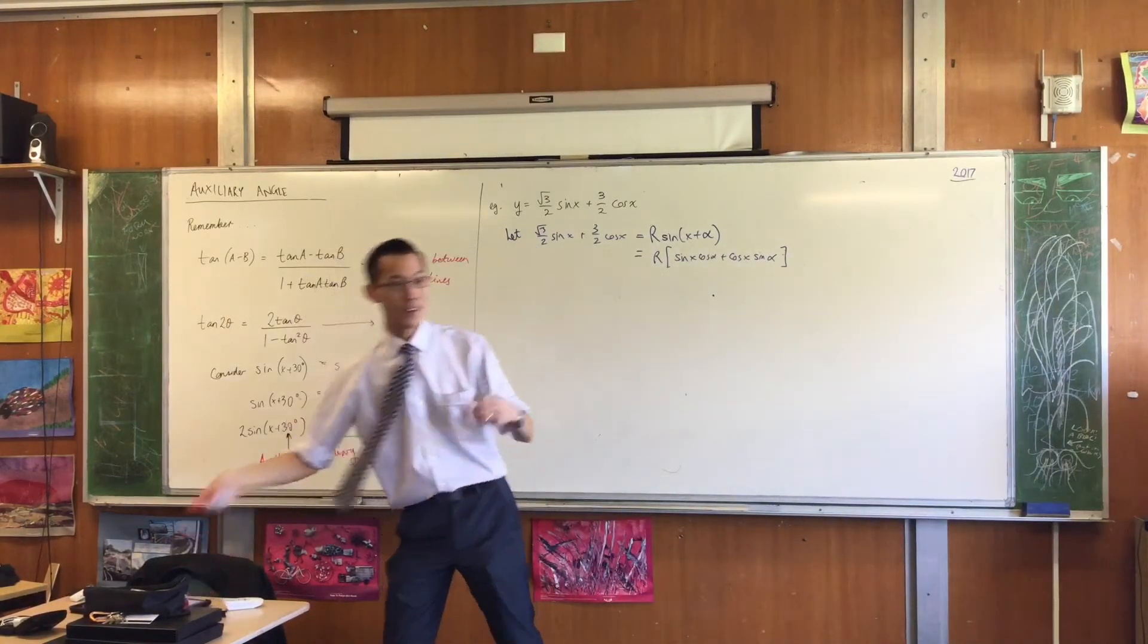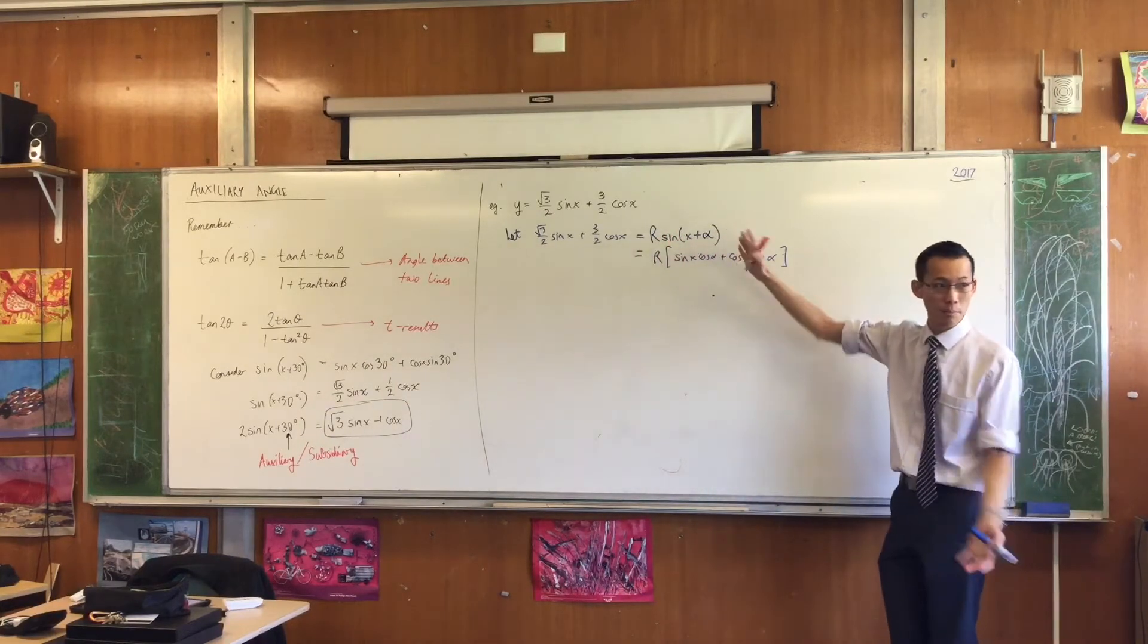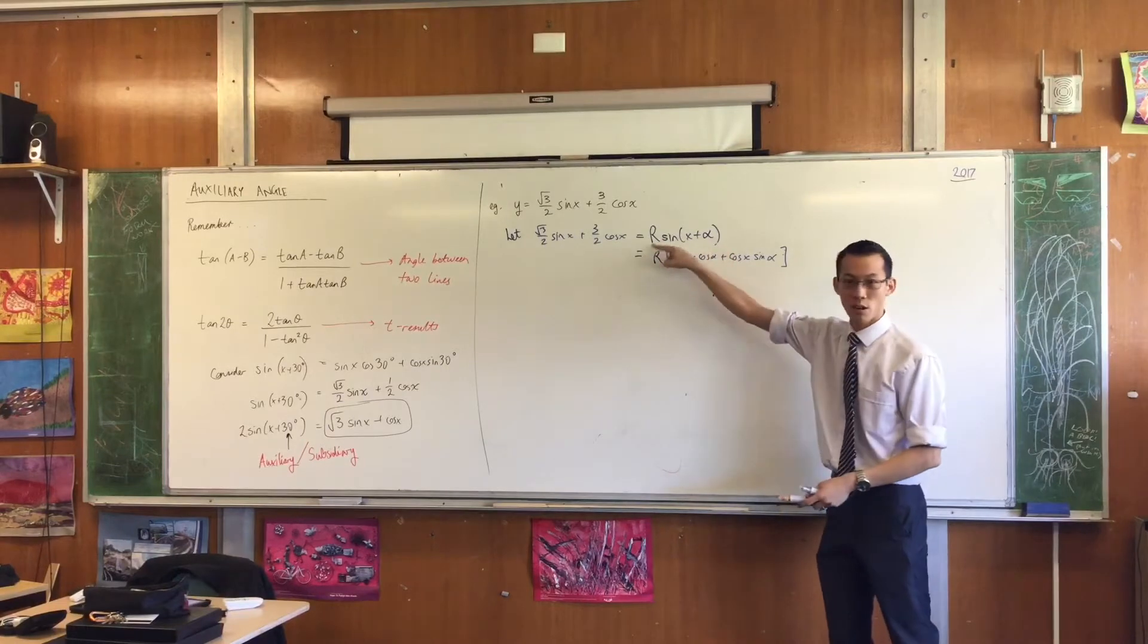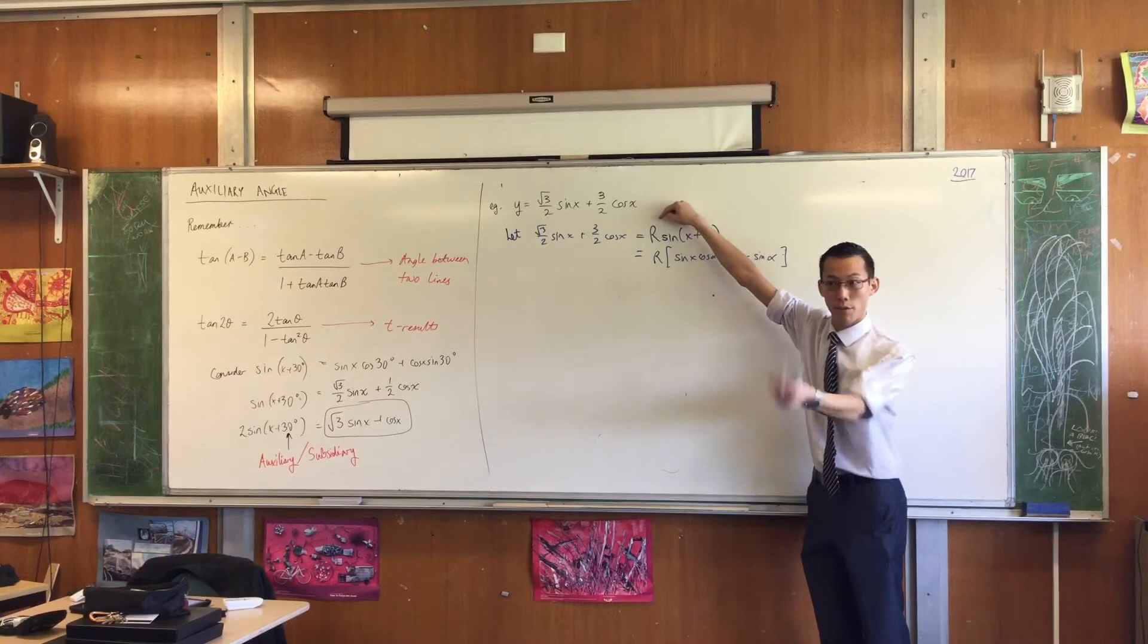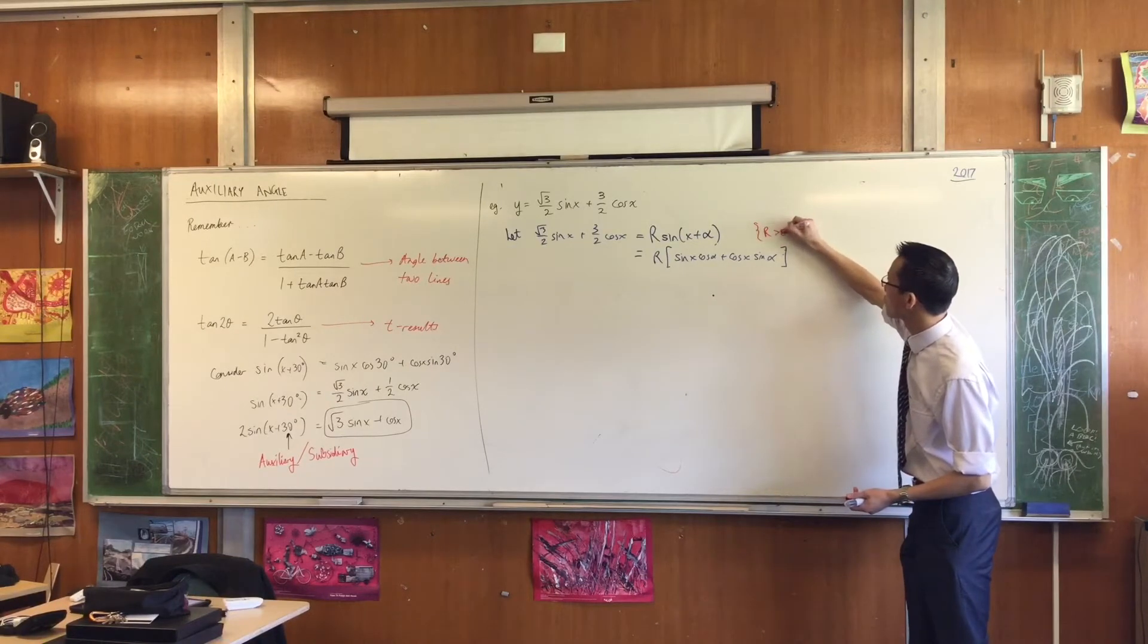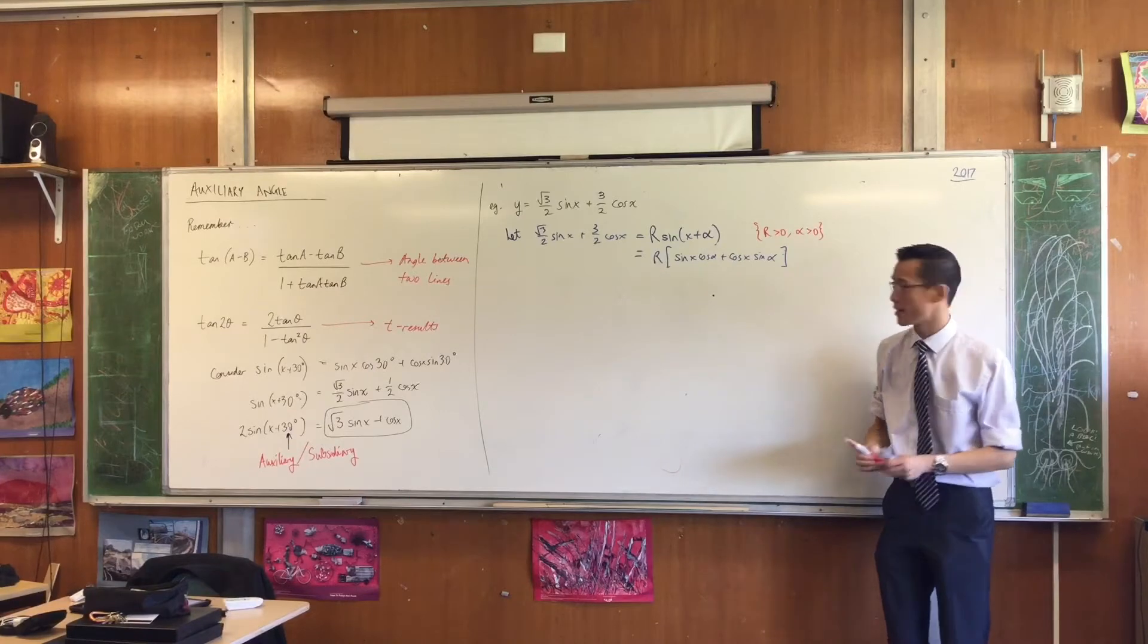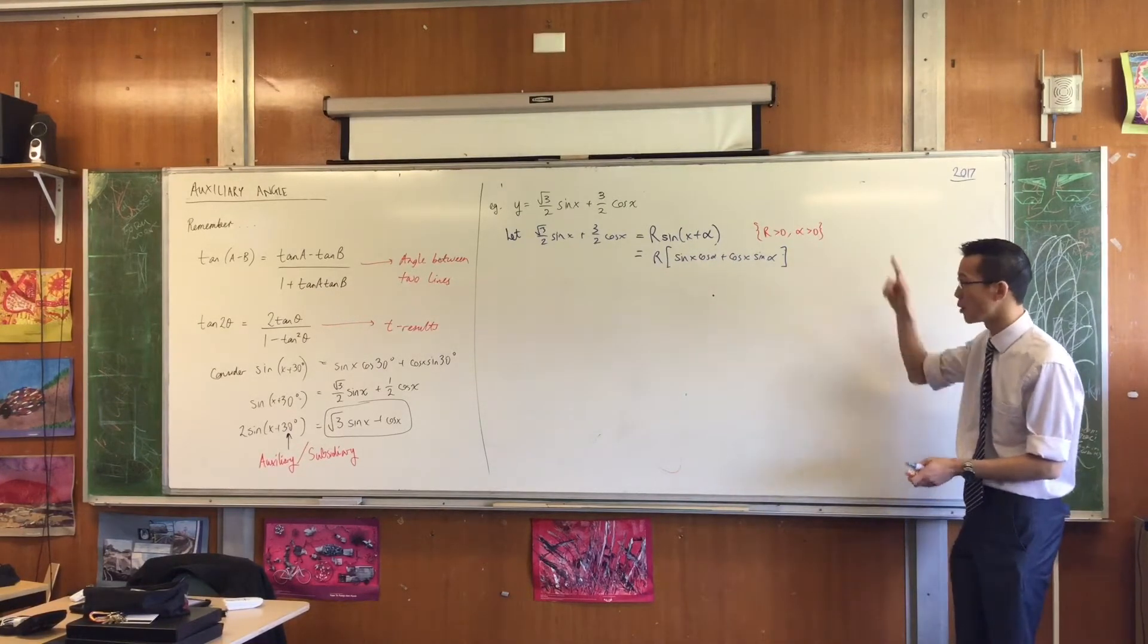What that says is, these are actually numbers. They're not variables like x. R is actually equal to something, and I'm going to find out what it is. Alpha is also equal to something, and I'm going to find out what it is. So you need to state that R and alpha are numbers I'm going to find, as opposed to variables that can change.